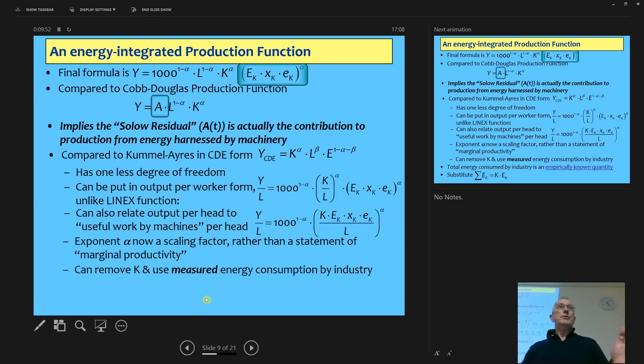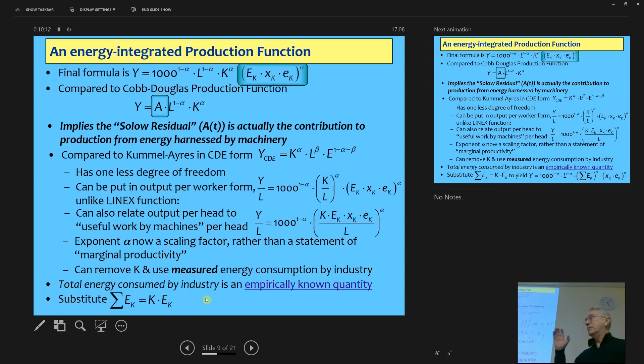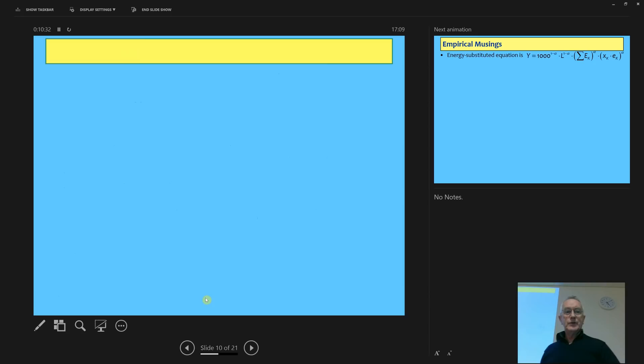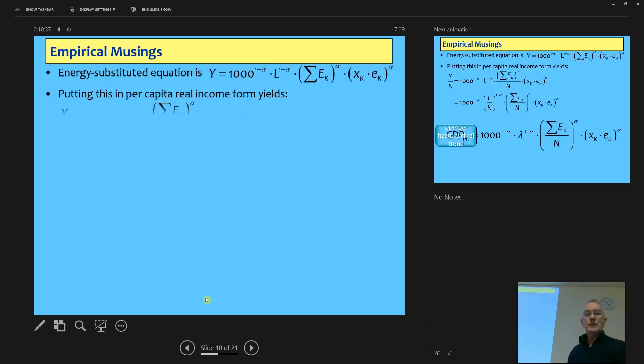And I can also relate it to the amount of useful work that a machine can do. Work by machines per head, and the exponent now becomes a scaling factor. It's no longer tied up with the theory of income distribution as it is with the Cobb-Douglas production function. But, of course, the big problem is K. We don't know what K is. Well, if you know the Cambridge controversies, which, of course, the non-Neoclassicals won, despite what the Neoclassicals themselves think. Samuelson conceded defeat on that one. We can't work out what K is. It's a big measurement problem. But we do actually have data on total energy used by industry per capita. So we can actually use that. I can substitute the total energy for that broken down to give a machine's time energy per machine, which we don't know. We do know the aggregate.